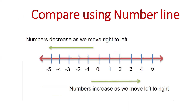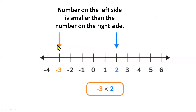Now, comparison using a number line. When we move forward — that is, from left to right — numbers increase. When we move backward — right to left — numbers decrease. A number on the left side is always smaller than a number on the right side. For example, minus 3 is less than 2. If you compare minus 3 and minus 1, minus 3 is to the left of minus 1, so minus 3 is less than minus 1. Similarly, minus 4 is less than minus 1.